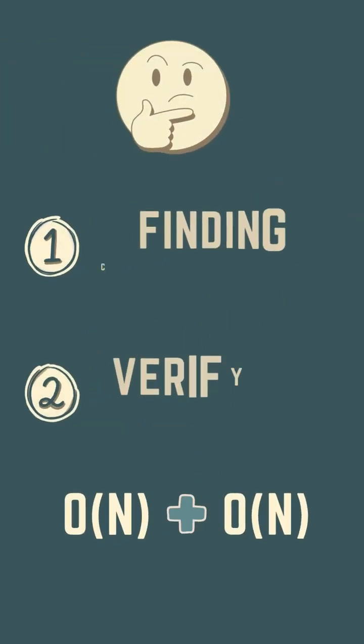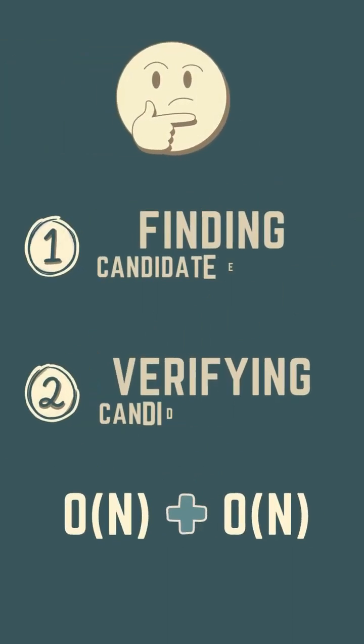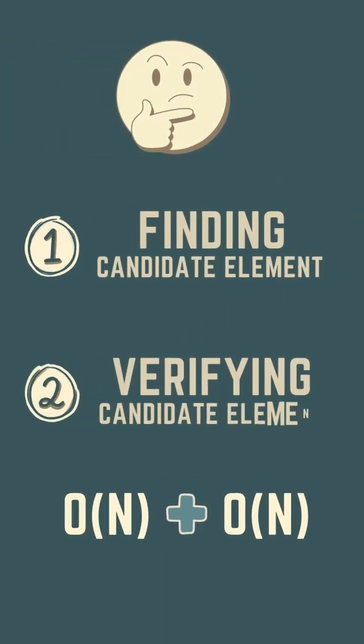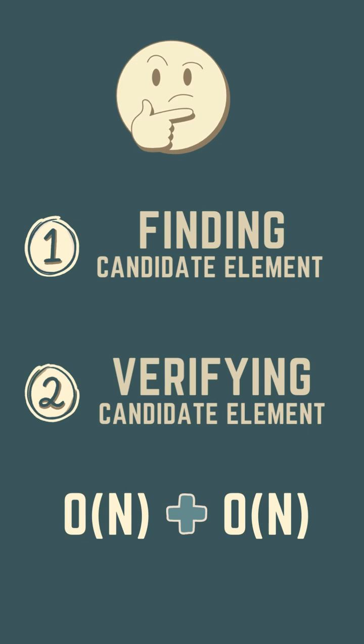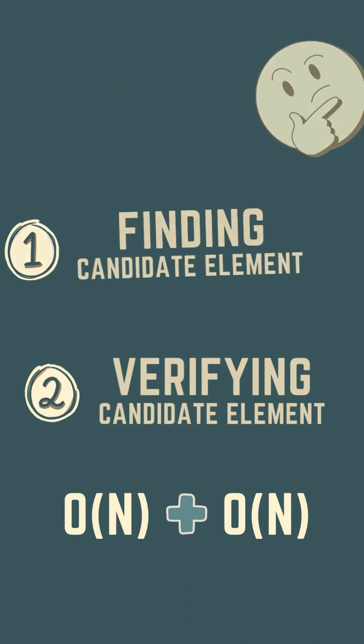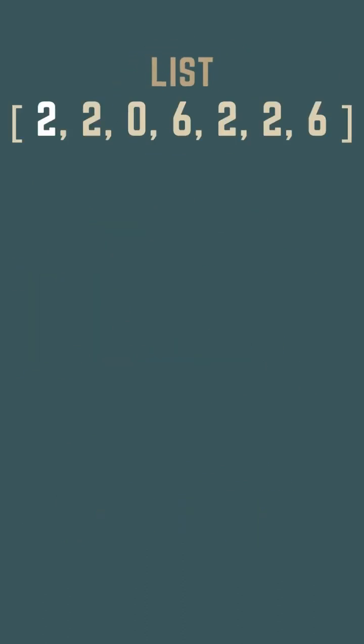The algorithm can be divided into two parts: finding the candidate element, and verifying the candidate element — both in linear time.